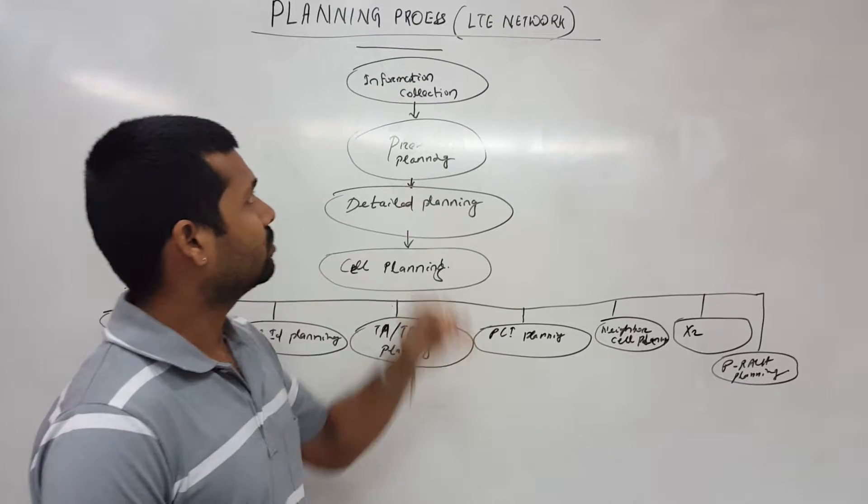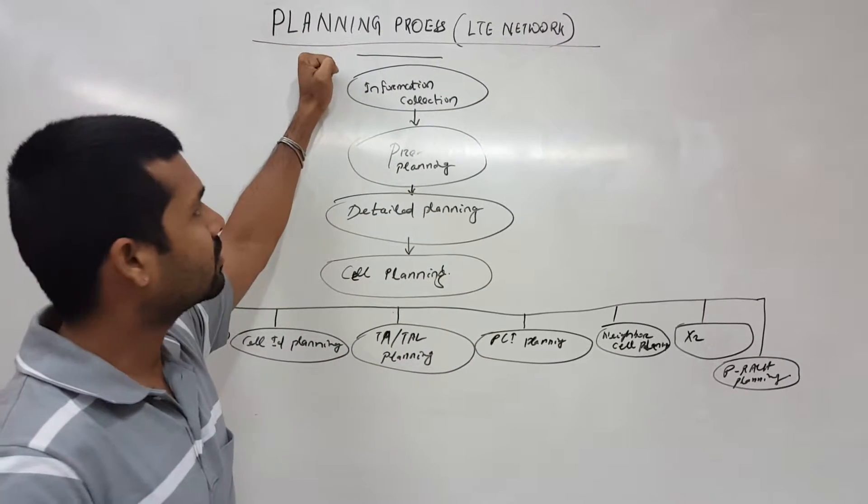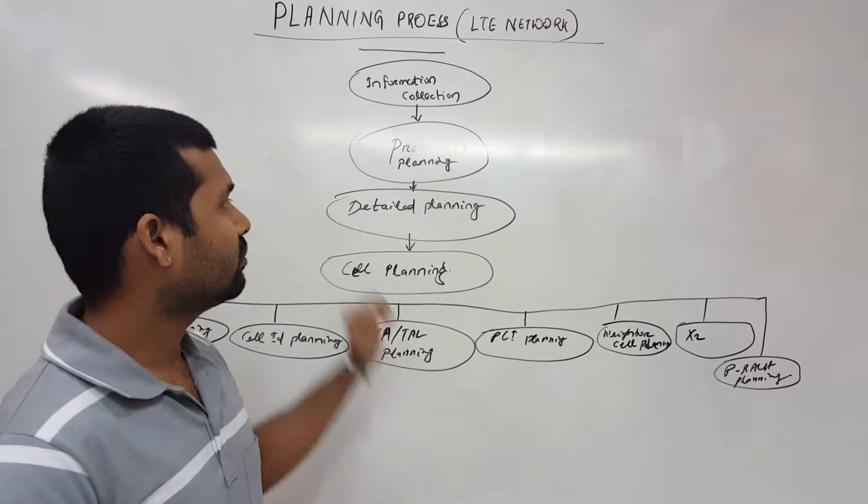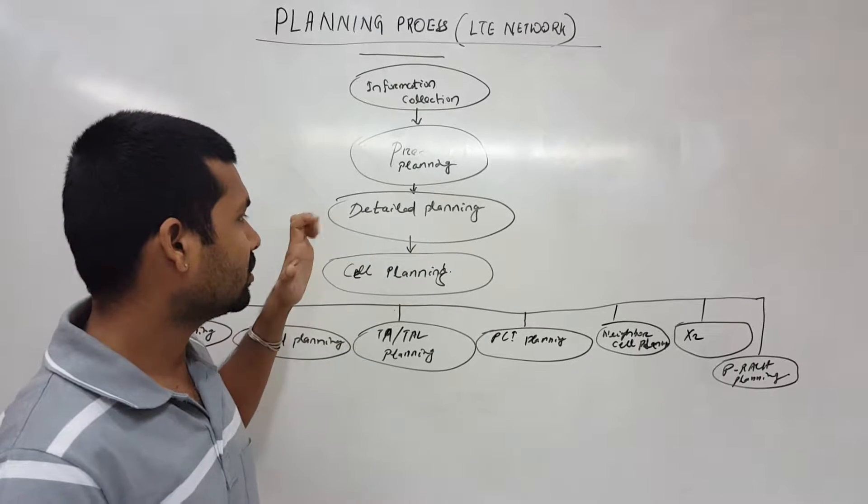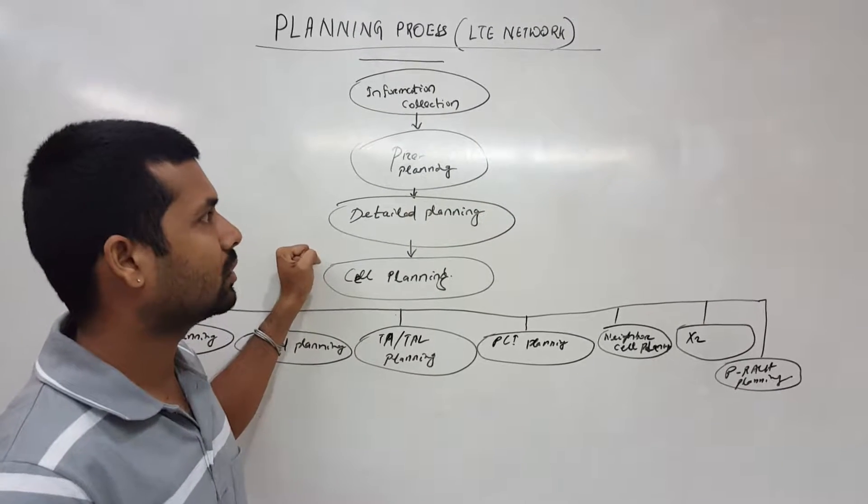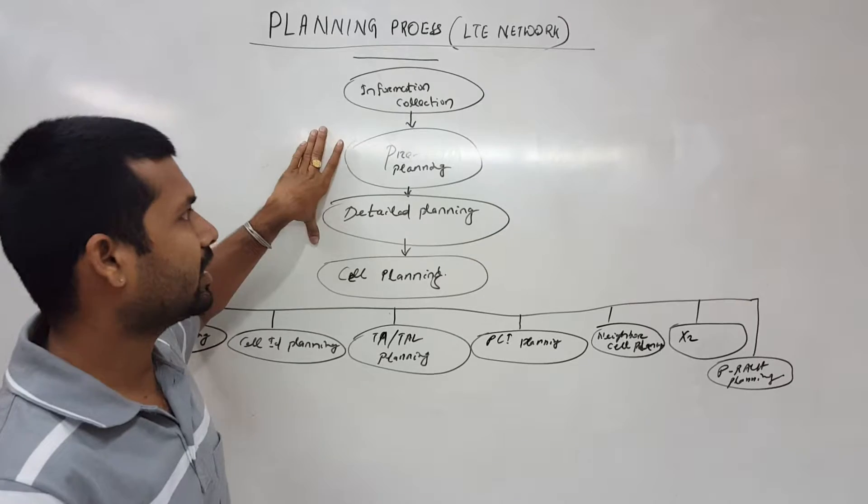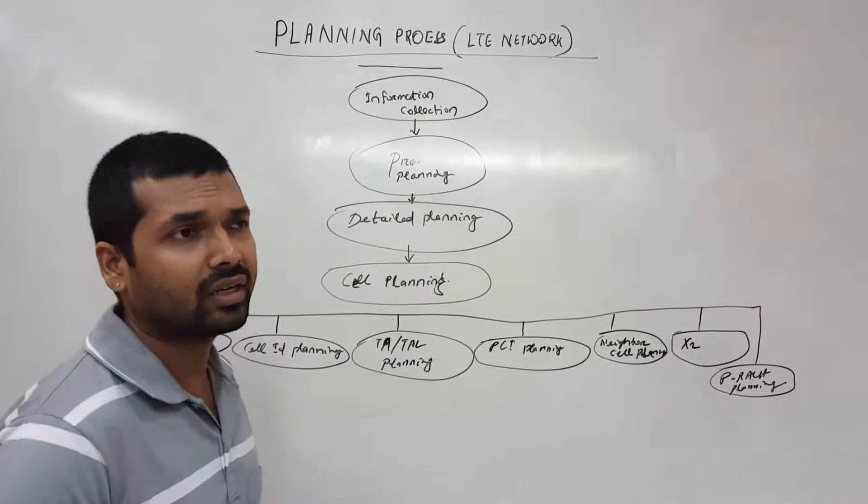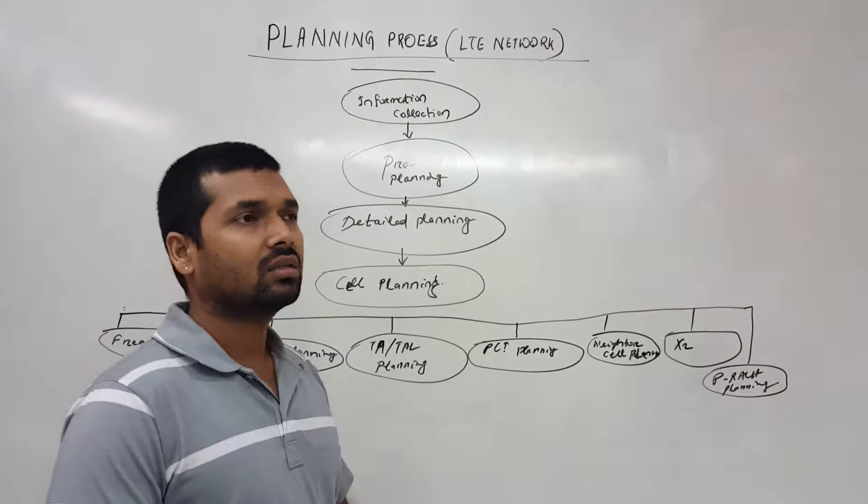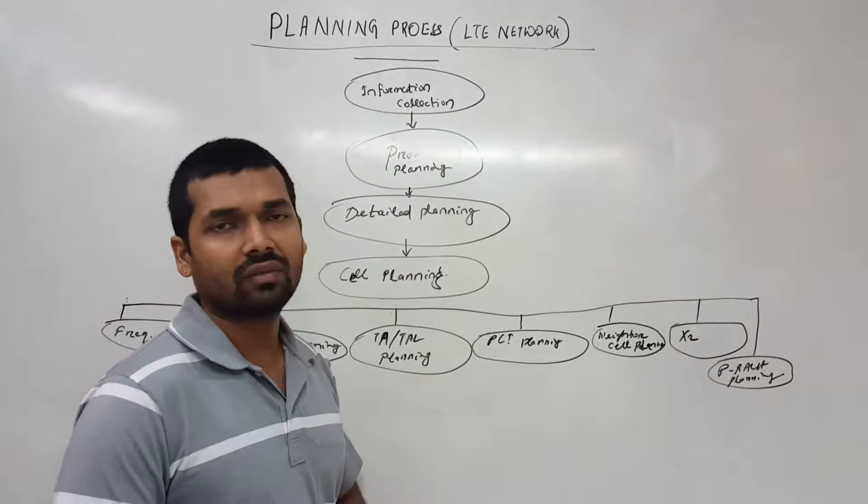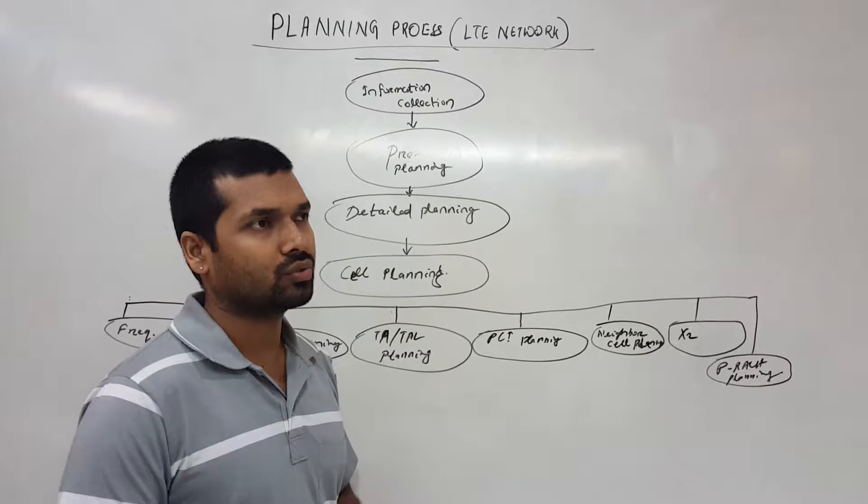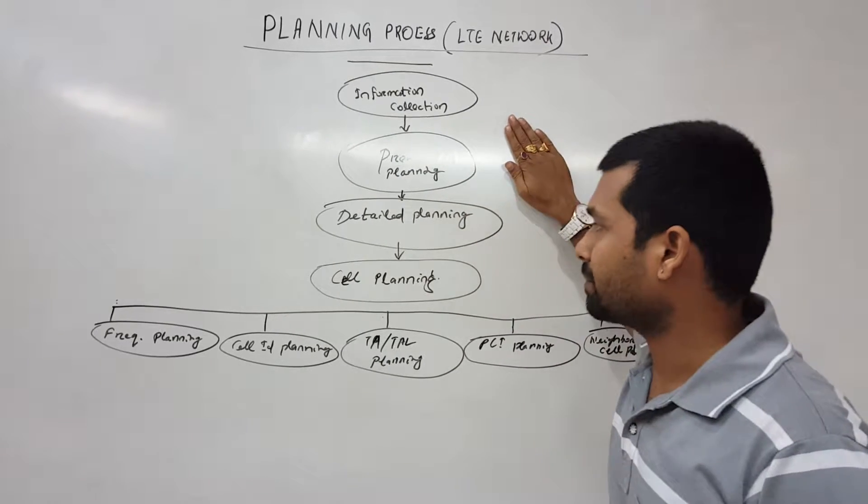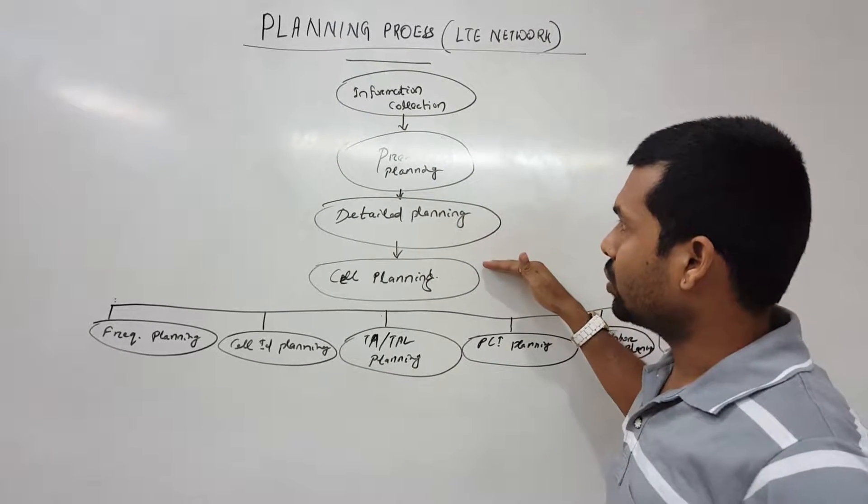We collect the information first, then move to pre-planning, then we'll do detailed planning, then we'll go for cell planning. Here pre and detailed planning, many things will come in the total planning process: the link budget, finding out the cell radius, what bandwidth of frequency available for us to do the plan, and many more things.